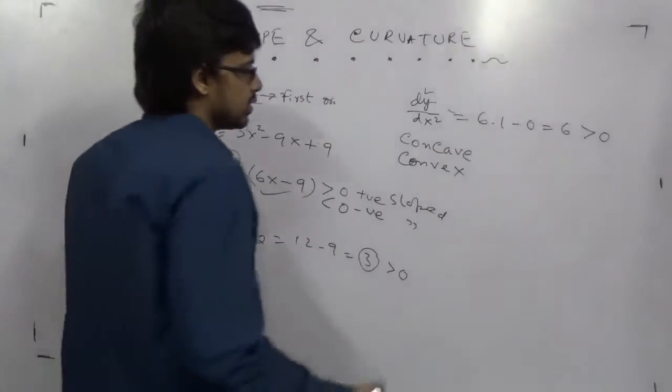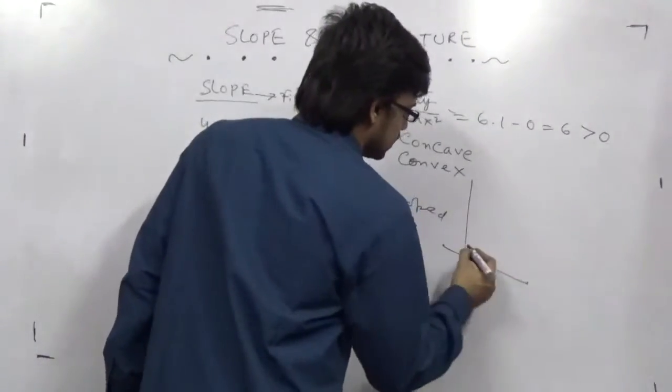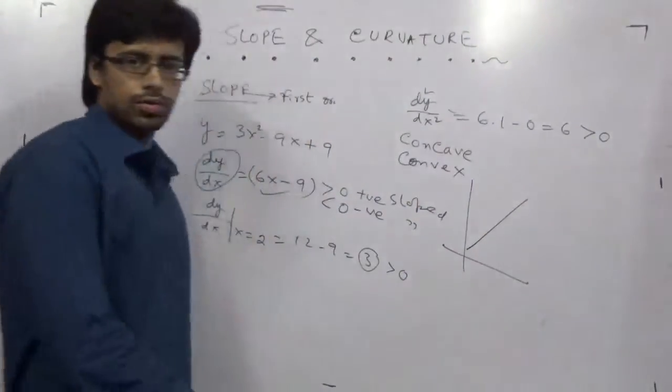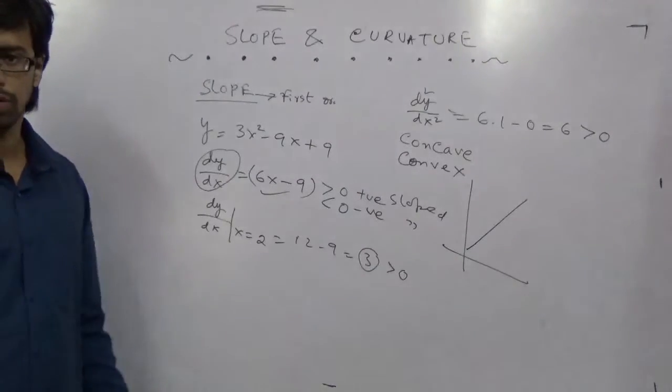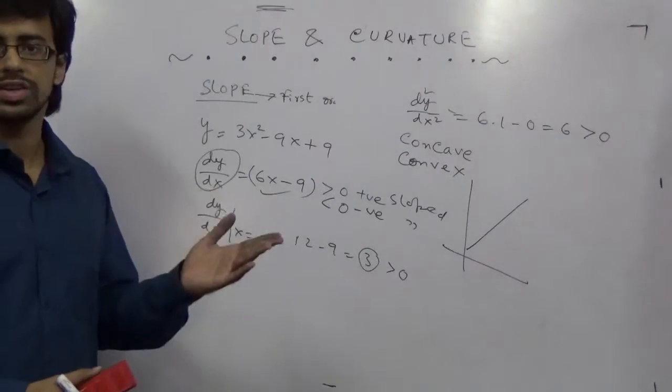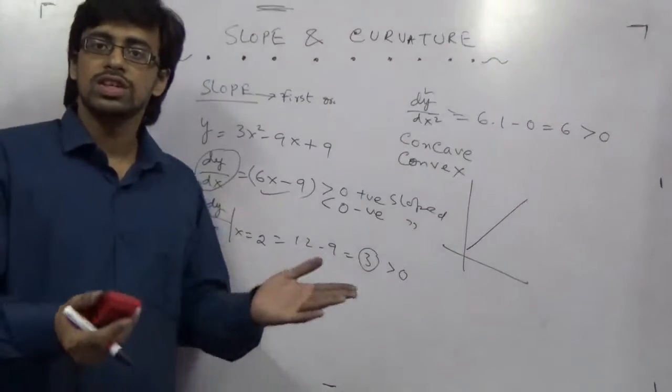Curvature tells us whether it is concave or convex. For example, this curve is upward sloping, but is it concave or convex? A linear function has zero curvature.